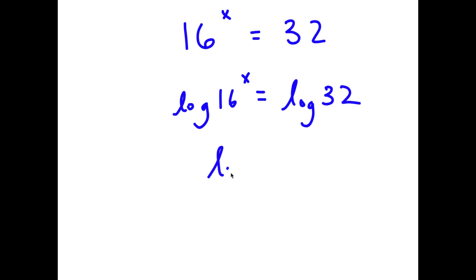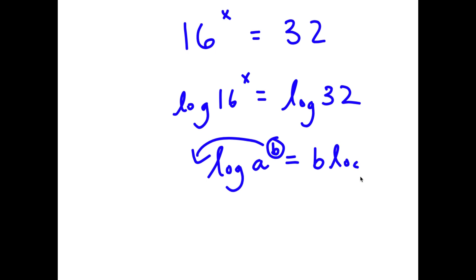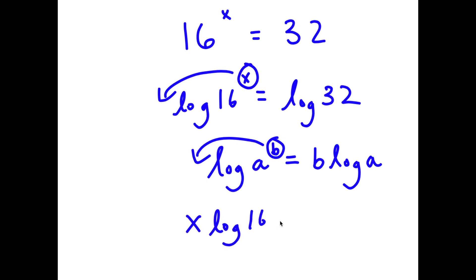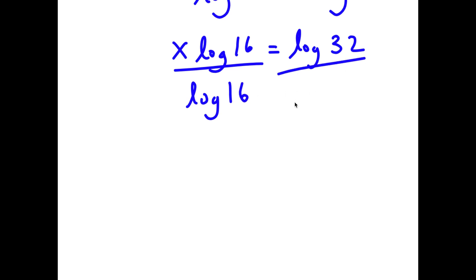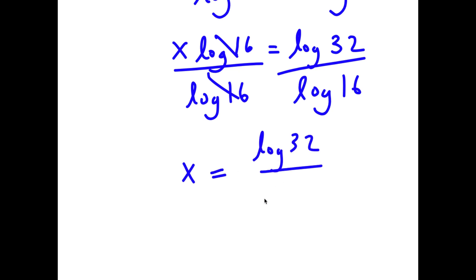Now if I have something in the form log a to the power of b, I can move my exponent b to the front, so this equals b times log a. For log 16 to the power of x, I can move x to the front, giving x times log 16 equals log 32. Now I'm going to divide both sides by log 16, so these two cancel out and I have x equals log 32 over log 16.